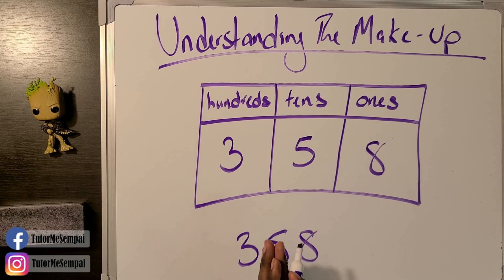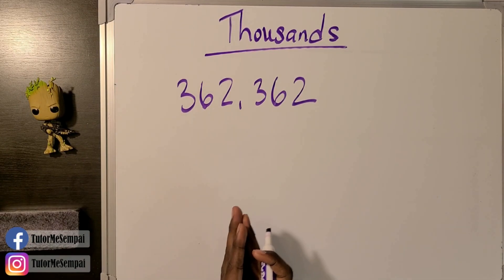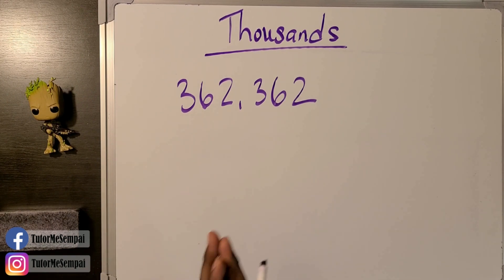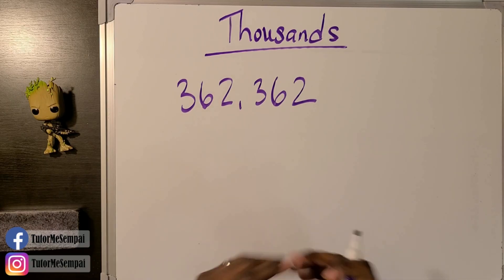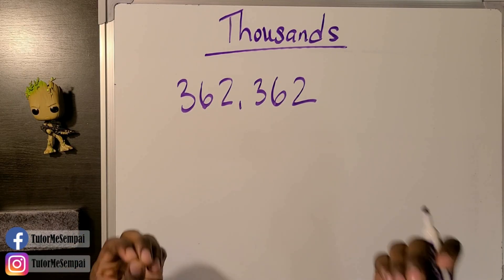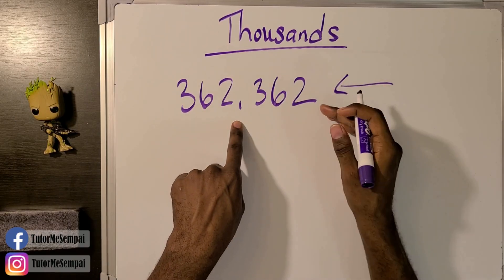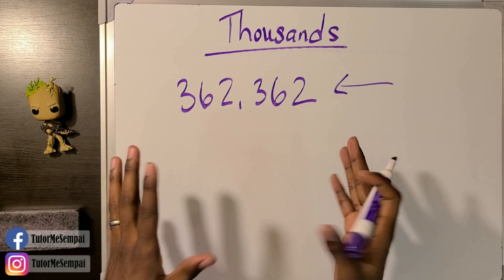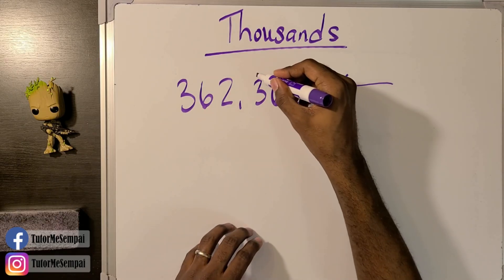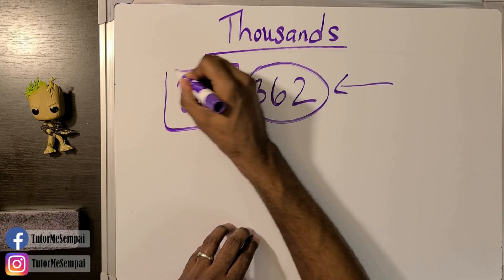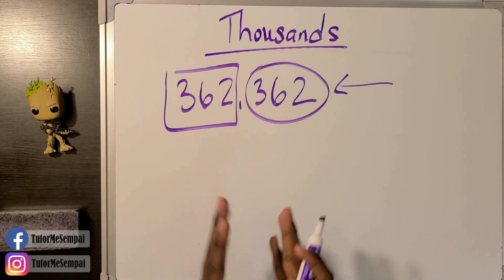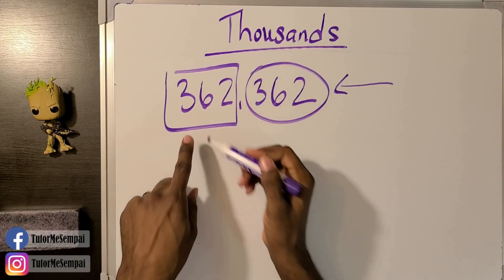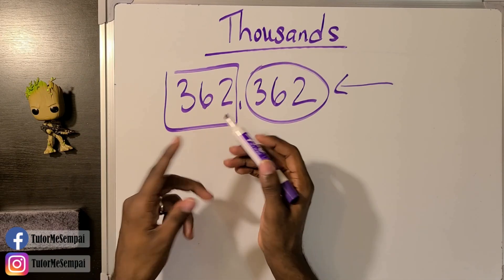Now that we've covered three-digit numbers, let's move to something bigger — a six-digit number. To break it down, you first need to be able to read it. One easy way to read big numbers is to name your commas starting from the right. The very first comma is always called the thousand comma. After naming it, break the big number into smaller groups of no more than three digits.